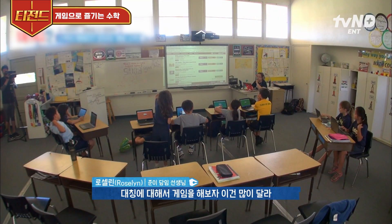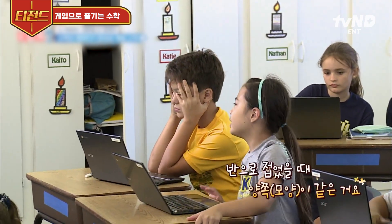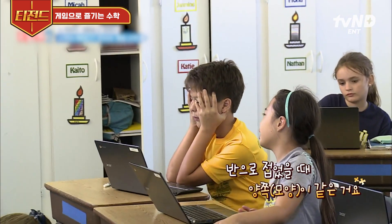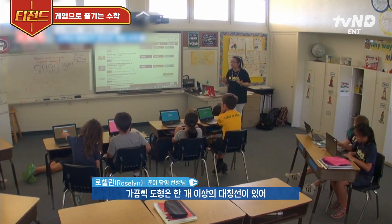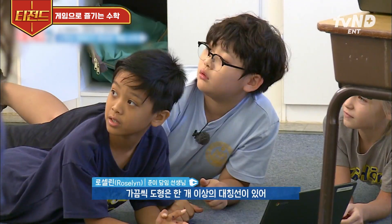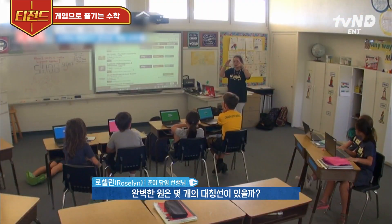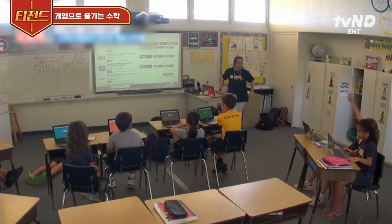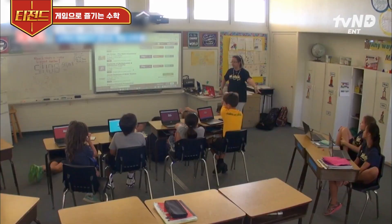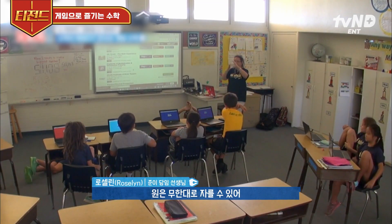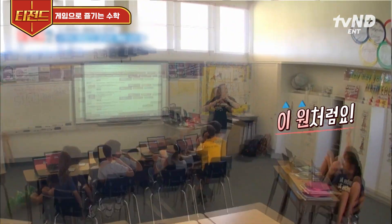Symmetry is very different. Can somebody tell me what symmetry is? Tyra? Some things you can fold it out — so in the heart, you can fold it out. Sometimes shapes have more than one line of symmetry. A circle, a perfect circle — how many lines of symmetry does that have? Infinity. You can cut that circle every single way — line of symmetry.